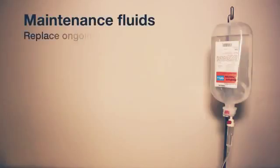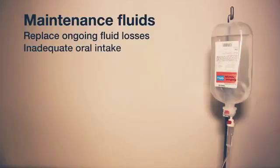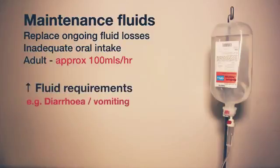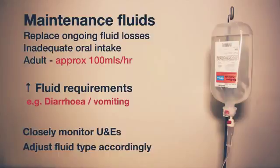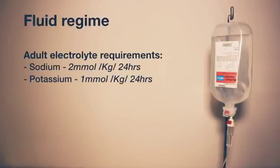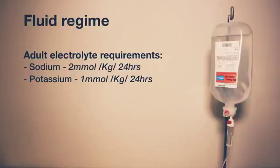Maintenance fluids are used to replace ongoing fluid losses in patients unable to maintain adequate oral intake. There are specific formulae for estimating maintenance fluid requirements based on patient weight. A typical adult of about 60 to 70 kilograms will require approximately 100 millilitres per hour, i.e. 2.4 litres over 24 hours, to maintain hydration — more if there are ongoing additional losses such as vomiting, diarrhoea or increased stoma output. Blood electrolytes should be regularly checked throughout, and fluid type varied accordingly. Adults require about 2 millimoles of sodium per kilogram and about 1 millimole of potassium per kilogram every 24 hours. A typical fluid regime may consist of alternating bags of normal saline with or without potassium chloride, 5% dextrose and Hartmann's solution.